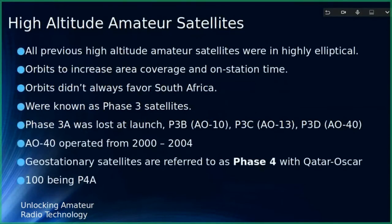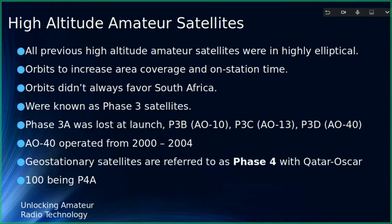Previous high-altitude amateur satellites were always elliptical Phase 3 satellites — OSCAR 10, OSCAR 13, and OSCAR 40. With those elliptical paths, when the satellite was furthest above you, you had a few hours to communicate and a nice footprint. There was about a 10-year dead period where we couldn't use that type of footprint, so the geostationary satellite has really opened things up. I think America is also now looking at a geostationary option.